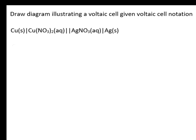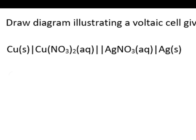We're asked to draw a diagram illustrating a voltaic cell given the cell notation. By convention, the two vertical lines in the middle represent the salt bridge. The single line between the formulas represents phase boundary.